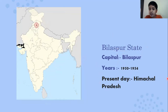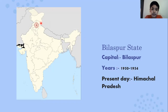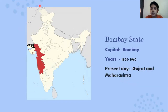Next is Bilaspur State. In present day, it is in Himachal Pradesh — this is the outline of Himachal Pradesh. It existed from 1950 to 1954, so for four years there was a state known as Bilaspur State.